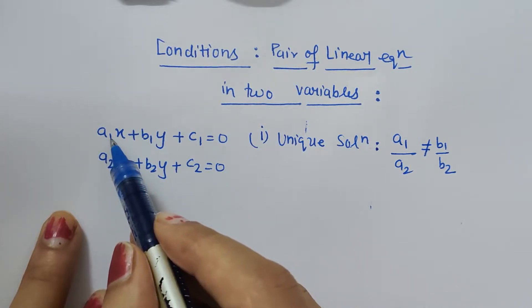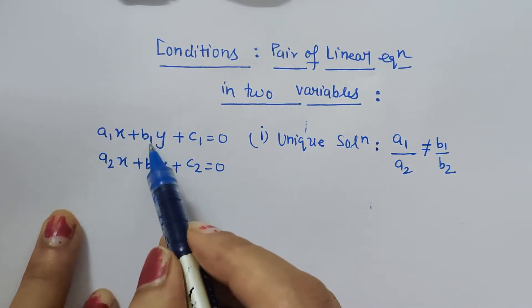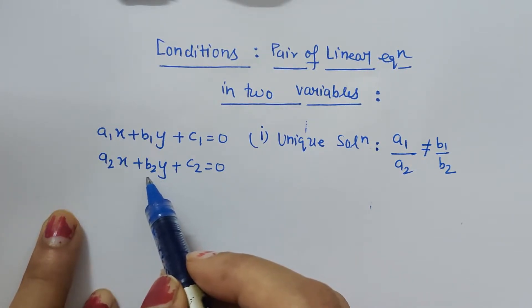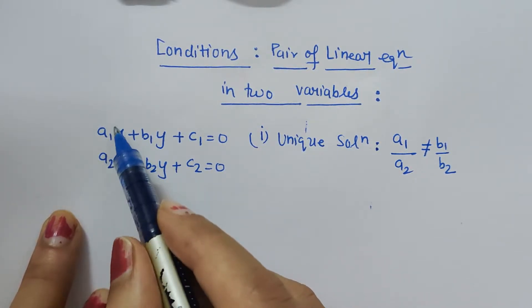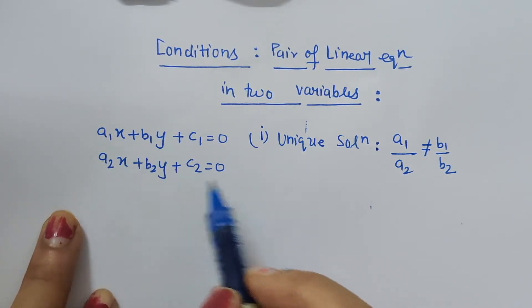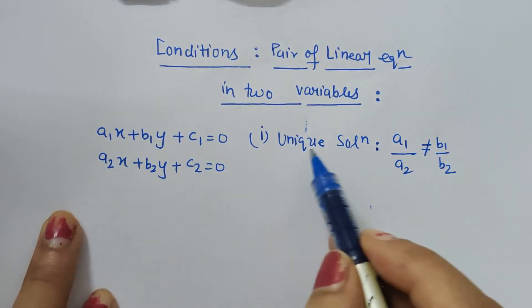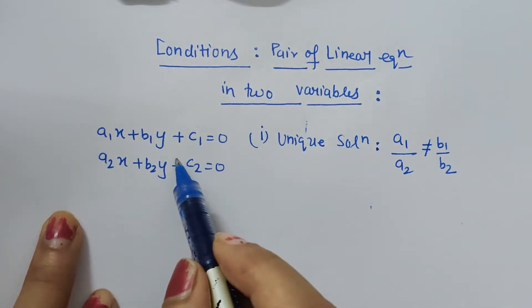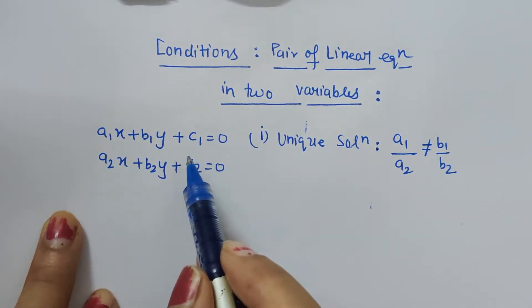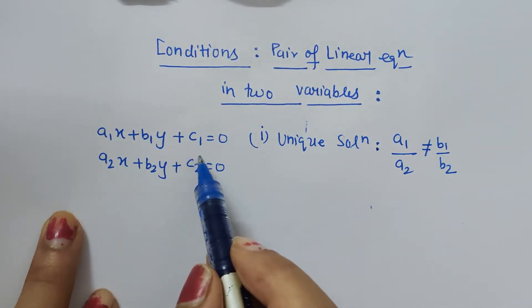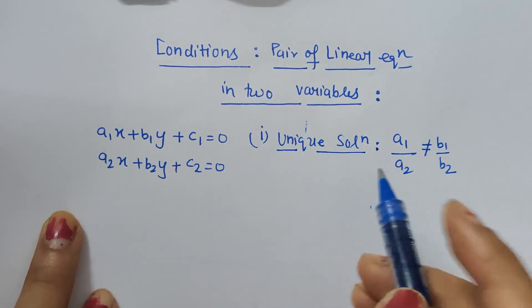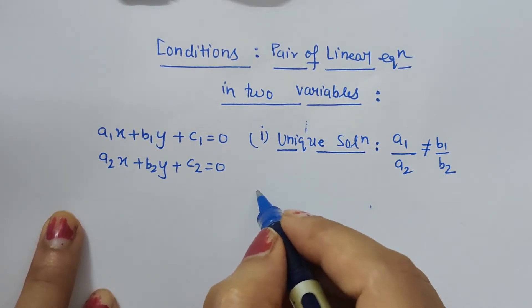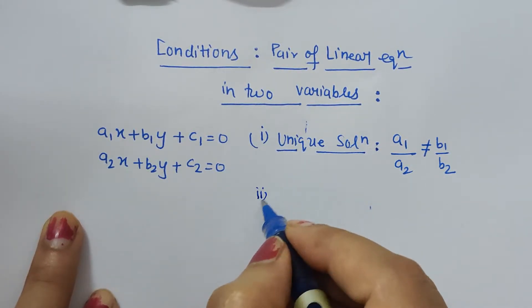Here it is clearly mentioned what is a1, a2, b1, b2. We just have to compare the ratios of these two. If they are not equal, then the system of equations will have a unique solution. This is very important.